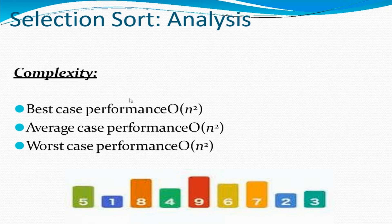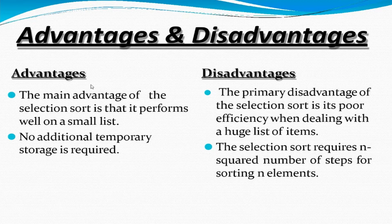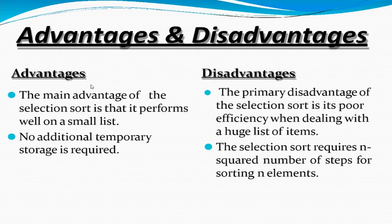For time complexity in Big O notation, the best case, average case, and worst case performance are all O(n²). The main advantage of selection sort is that it performs well on a small list, but that becomes a disadvantage for larger lists since the number of steps is too many. Another advantage is that no additional temporary storage is required. The disadvantage is it requires n² steps for sorting n elements, which is high compared to other sorting algorithms.